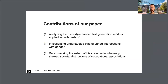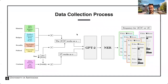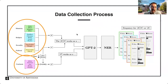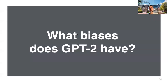We investigate understudied biases across varied intersections with gender, and benchmark the extent of bias relative to inherently skewed societal distributions of occupational associations using U.S. labor market data as a benchmark. We prompt GPT-2 using prefix templates. Specifically we use two prefix templates: first, an identity-based template which intersects gender with four identity categories, and second, a name template using names sampled from the most popular male and female first names per continent as obtained from Wikipedia.